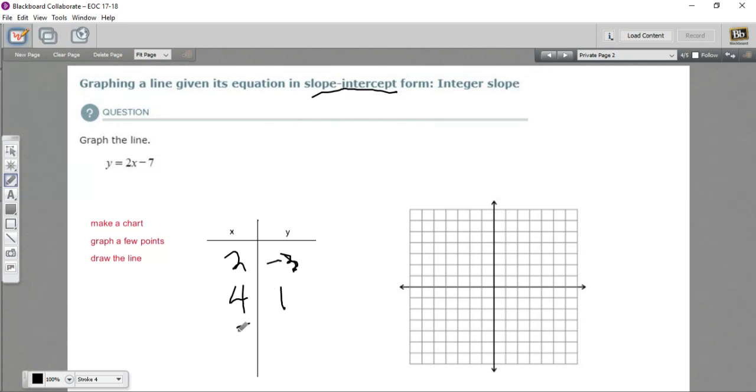Now let's just do one more. So 2 times 5 is 10 minus 7 would be 3. So now we've got three points, we can really double check our work here. Let's plot these. 2 on the x is negative 3 on the y, and 4 on the x is 1.